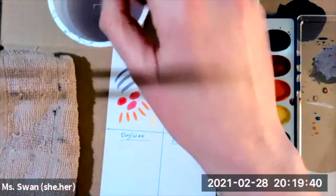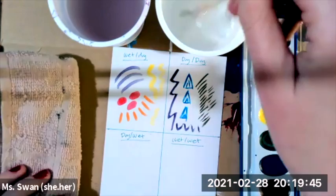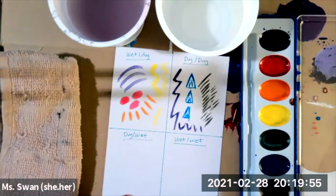Next, we have dry on wet. We have a dry brush on wet paper. This is used for really soft lines and shapes, whereas dry on dry is more detailed. This is more just shapes and backgrounds and things like that.